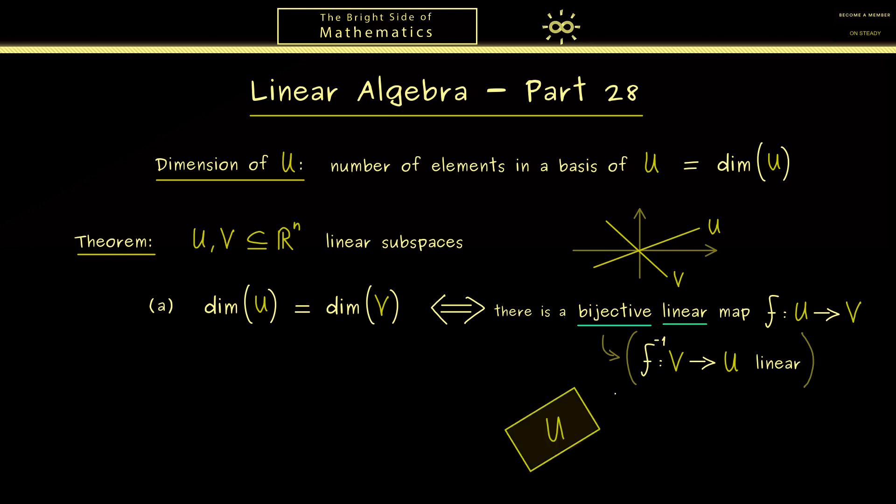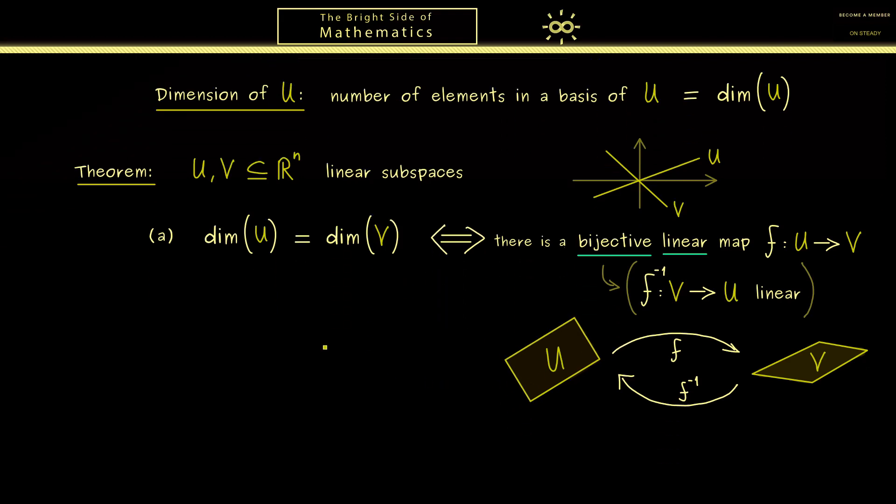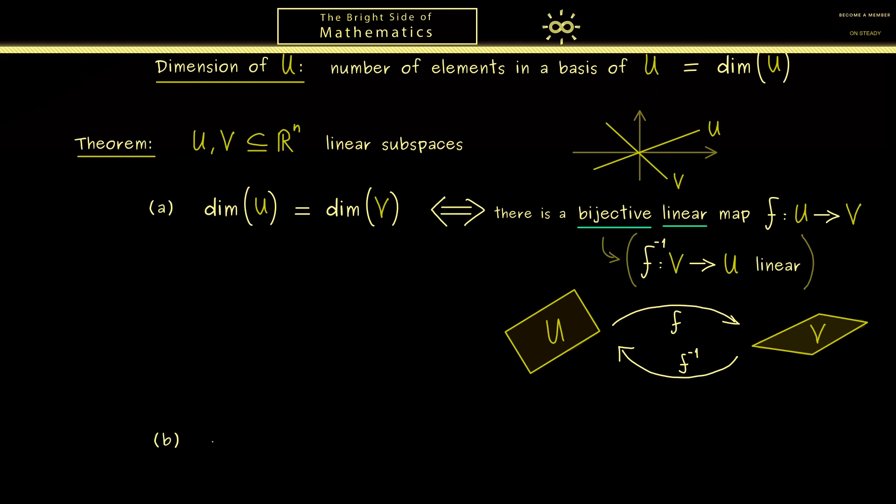So you could see it like that, that the only thing that the map F does is renaming the vectors in U. So the two subspaces could look differently but you can always translate back and forth with F. So now from this equivalence we can immediately conclude another important implication. And this is now what we formulate with point B.